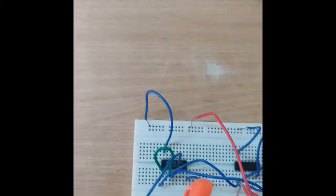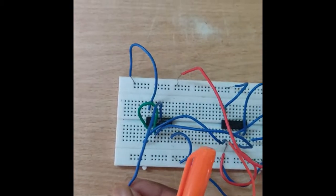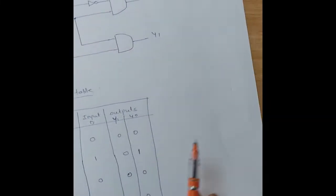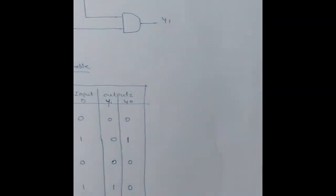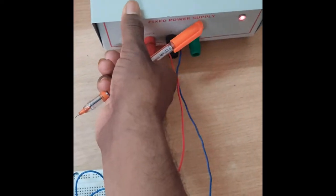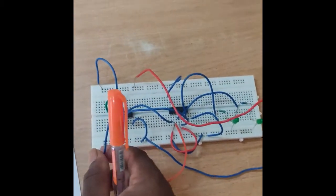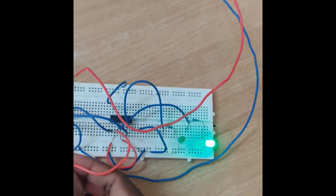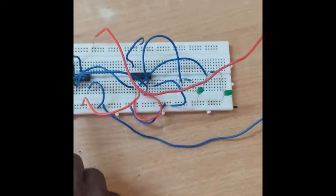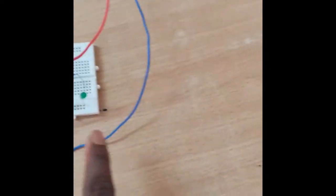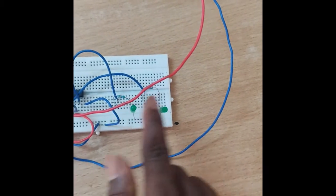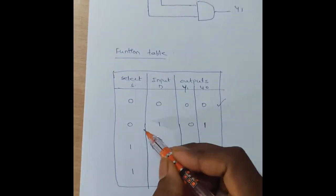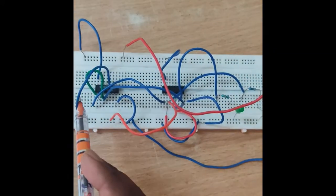This is the S wire and this is the D input. From our function table, the first combination is zero-zero. The first switch is on the fixed power supply. For inputs S=0 and D=0, both are connected to ground. The outputs Y0 and Y1 are both zero — that means both LEDs are in the off condition.